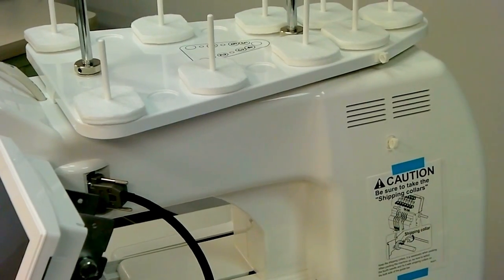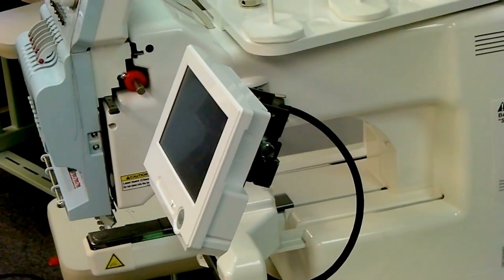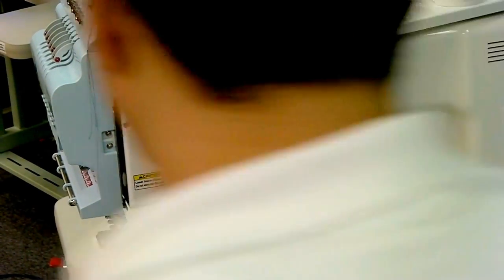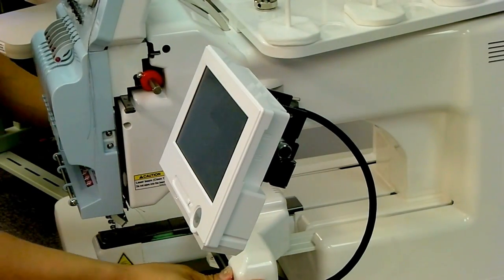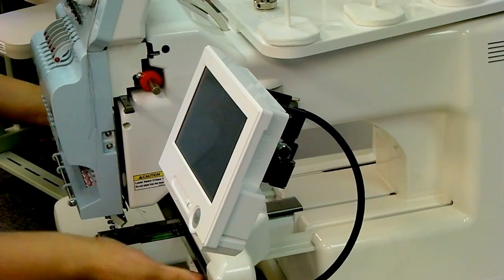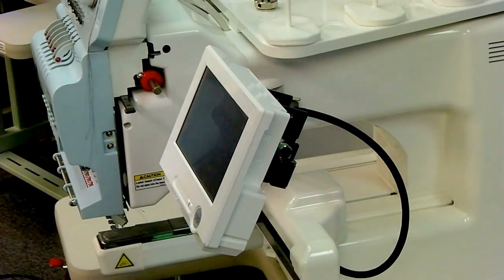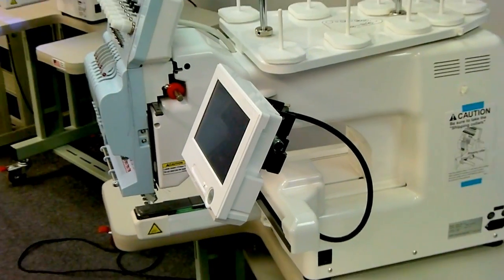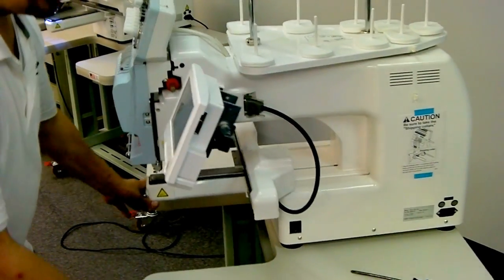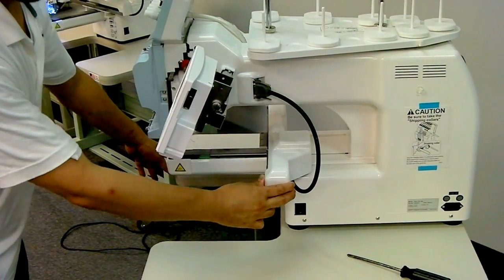Zooming out here a little bit to get a better view of the machine, we want to make sure that the X carriage now moves on its own with the power off, with the machine power off. You should be able to move that forward and backwards.